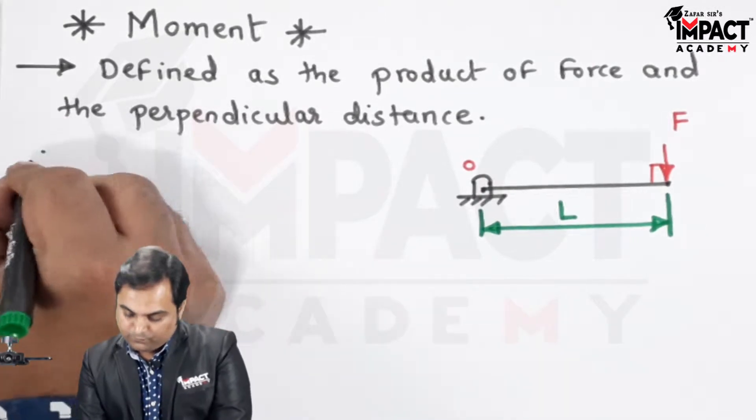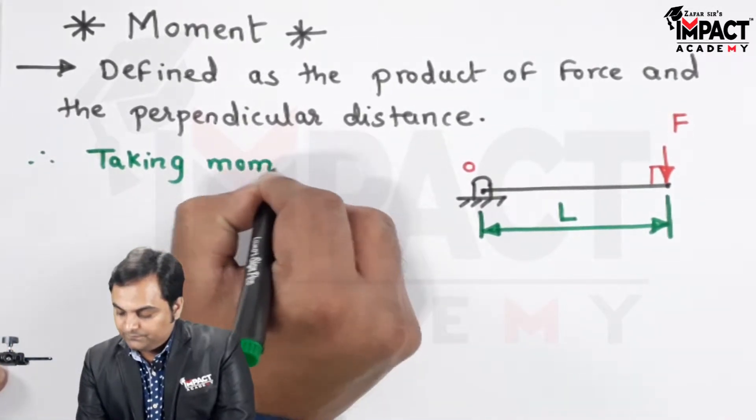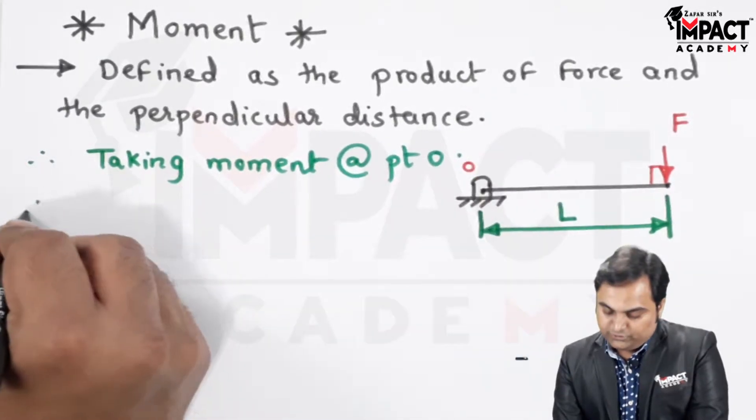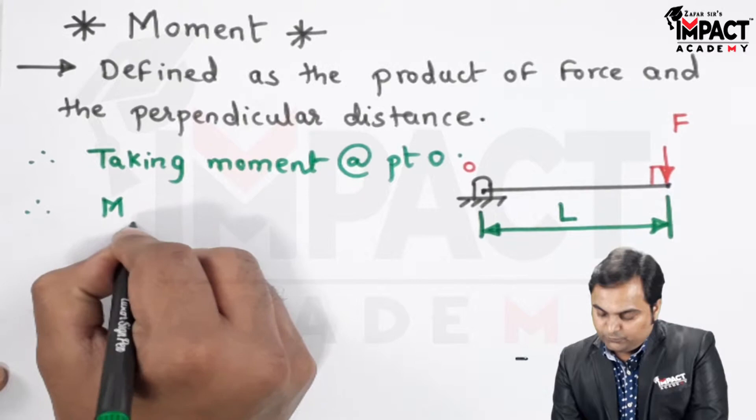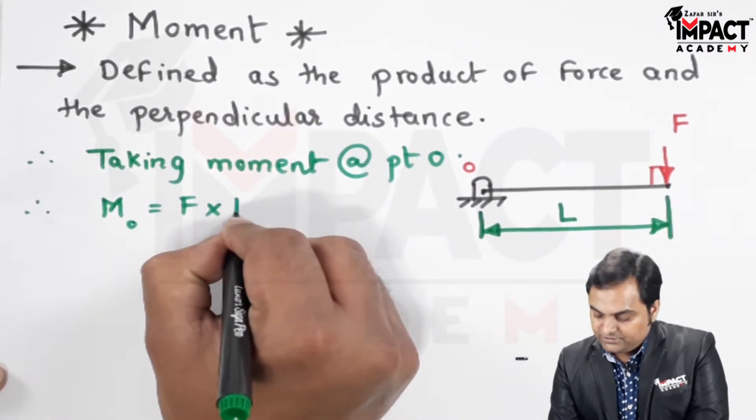Taking moment about point O: the moment about point O, M subscript O, would be force times the perpendicular distance L.